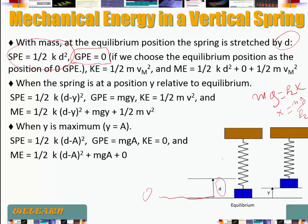The kinetic energy is still going to be the maximum kinetic energy, one half of m times v_max squared. So the mechanical energy is going to be the sum of all three: spring potential energy one half of kd squared, gravitational potential energy zero at this point, plus one half of m v_max squared.